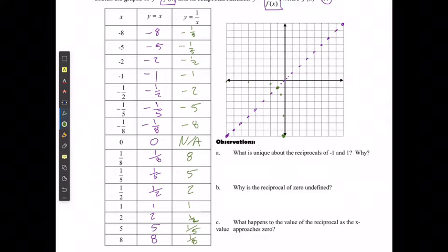Then at 0, nothing seems to work because I can't divide by 0, and I have this point here where nothing will happen. Then when I get to the positive range, I'm going to start with that 8, then 5, then 2, then 1, 1 half, 1 fifth, 1 eighth. And when I connect these points, we can see that it has a pretty unique shape.